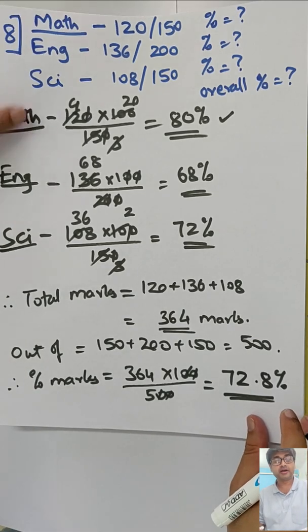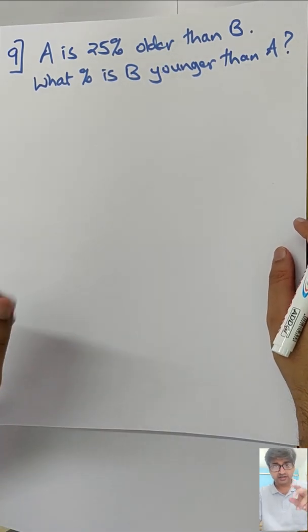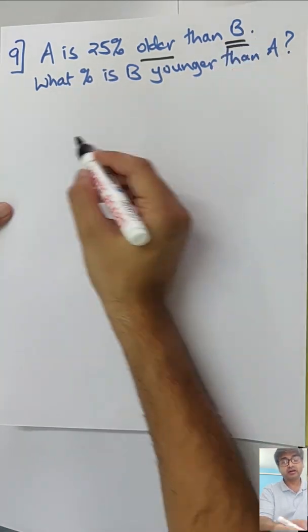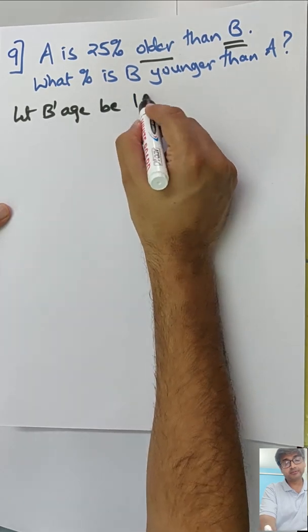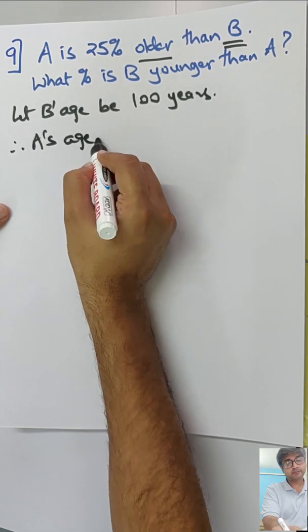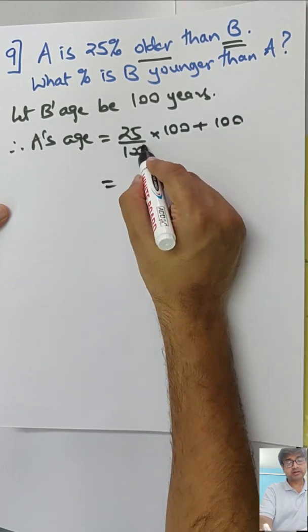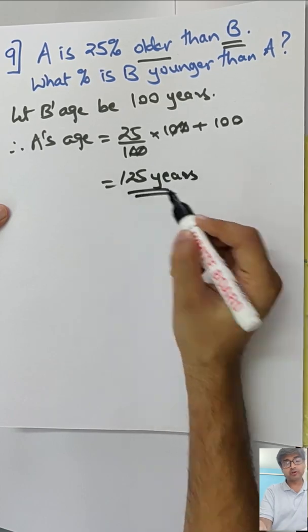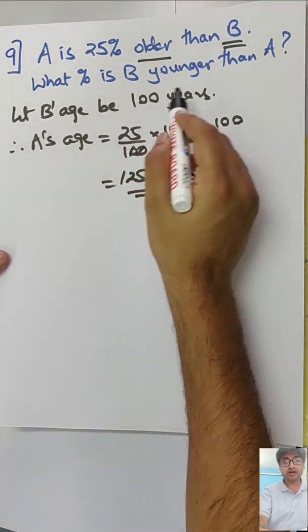Let's go to the next one, sum number 9. We've done this type before, it's just a recap. Pause right now, do it on your own. A is 25% older, so B is younger. Let B's age be 100 years. Therefore A's age will be 25% of 100 plus 100, so that becomes 125 years because A is older.